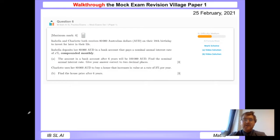On to question six. Isabella and Charlotte both receive 80,000 Australian dollars on their 18th birthday to invest. Isabella deposits her 80,000 dollars into a bank account that pays a nominal annual interest rate of x percent, compounded monthly. Notice in these questions they often put the compounding in bold. The amount after six years will be 100,000 Australian dollars. Find the nominal annual interest rate correct to two decimal places.